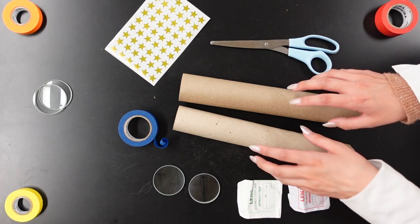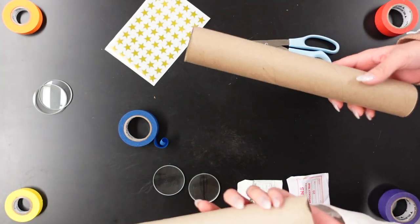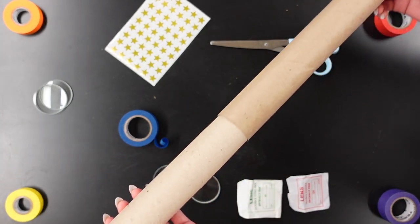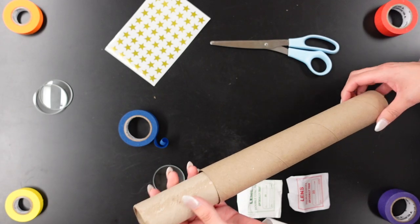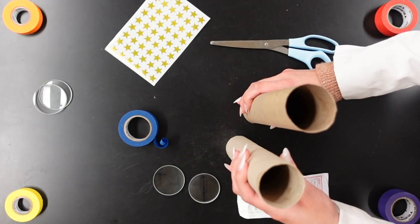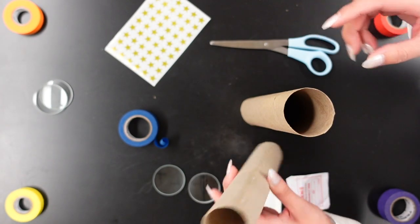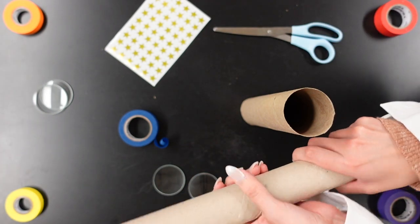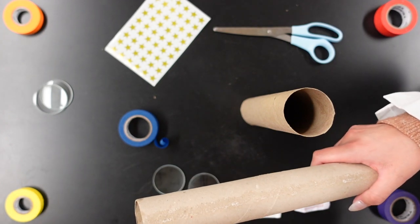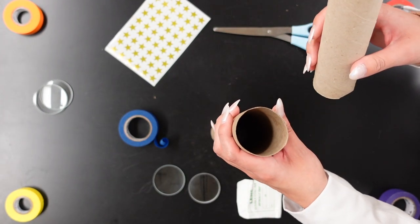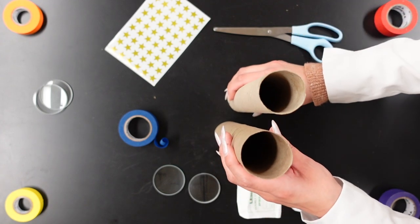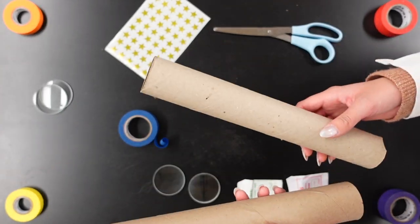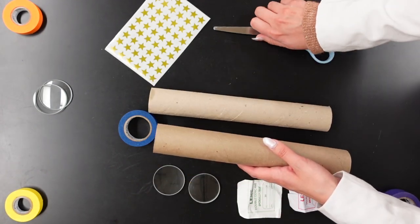Let's get started. I just happen to have paper towel rolls that go into each other pretty seamlessly, so I'm not going to do anything to alter this. But if you have two that are exactly the same width, then you'll need to cut one all along the edge like this. Then you'll roll it just a little bit so that it becomes a little bit smaller and it can fit inside of one of the tubes easier. We just happen to be recycling two rolls that were different sizes, so we're not going to cut them today.